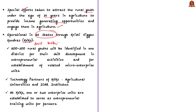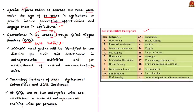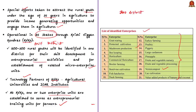The scheme is operational in about 25 states through Krishi Vigyan Kendras (KVKs). As per the scheme, in one district about 200 to 300 rural youths will be identified for skill development in entrepreneurship activities and establishment of related micro-enterprise units in areas like mushroom cultivation, seed processing, poultry, dairy-related activities, vermicompost, and other related activities. KVKs will involve agricultural universities and ICAR institutes as technology partners, and one or two enterprise units are established at KVKs to serve as entrepreneurial training units for neighboring farmers. The scheme is presently being implemented in around 100 districts on an experimental basis.